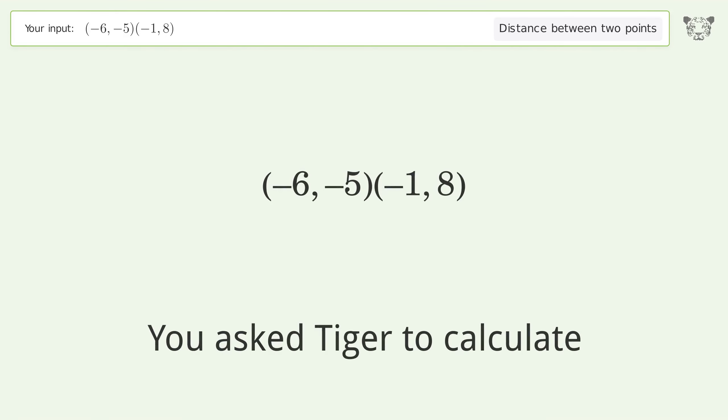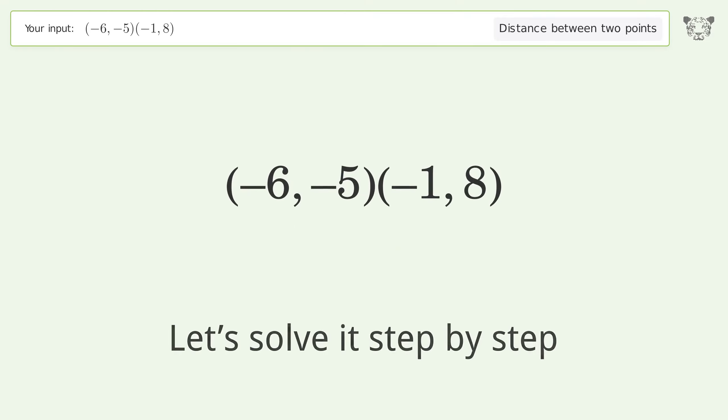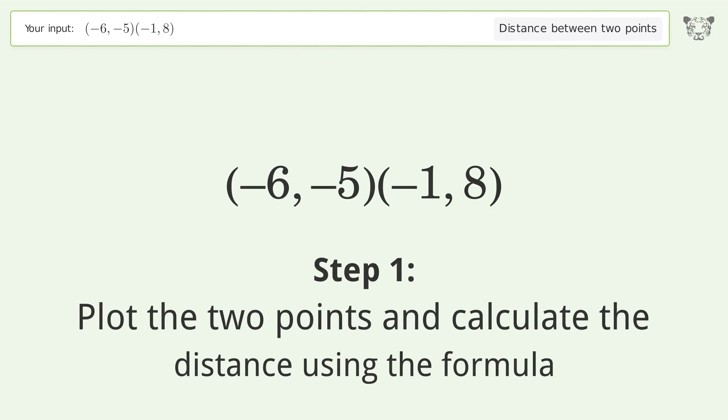You asked Tiger to calculate the distance between two points. The distance between the two points is the square root of 194, or 13.928. Let's solve it step by step. Plot the two points and calculate the distance using the formula.